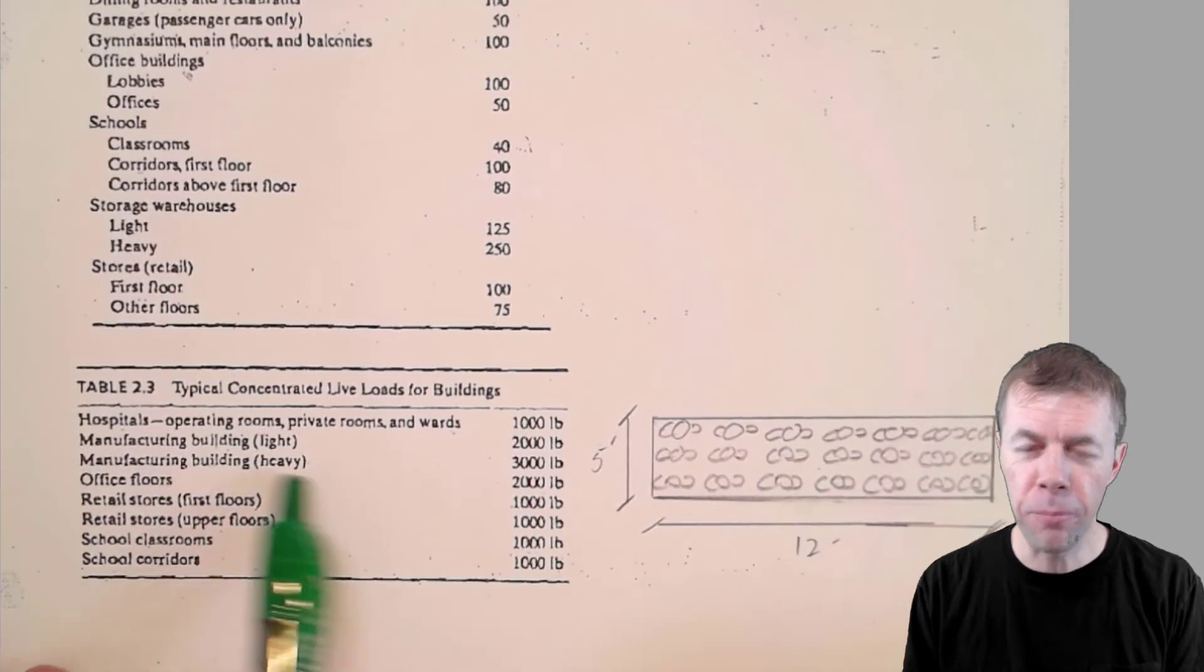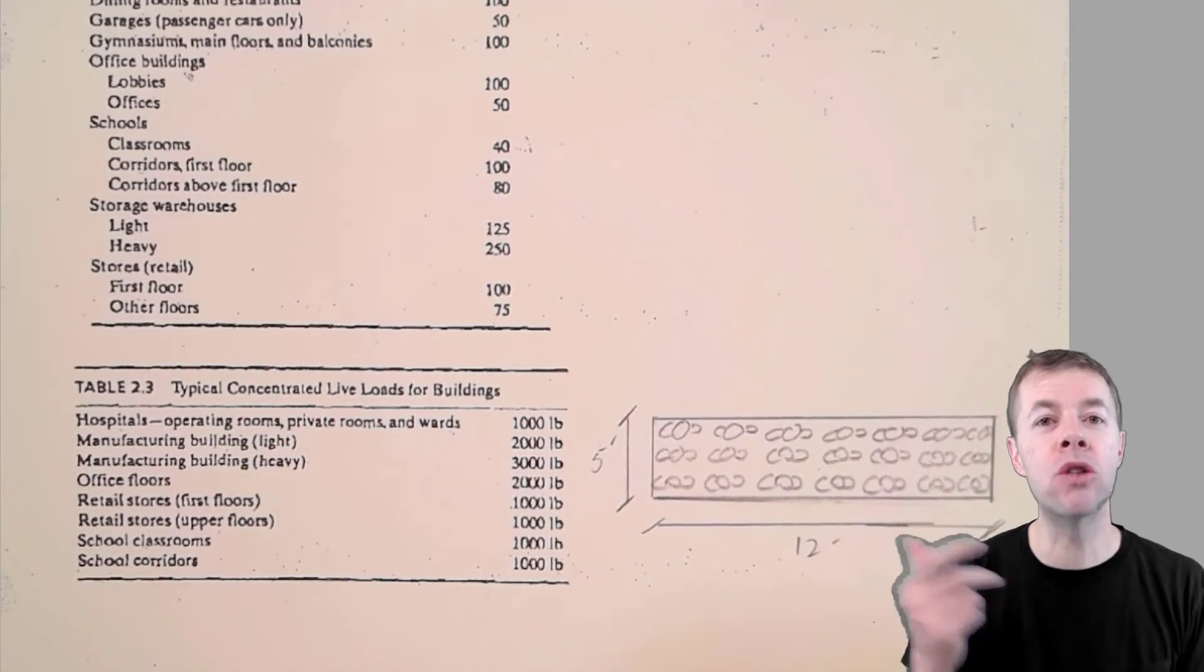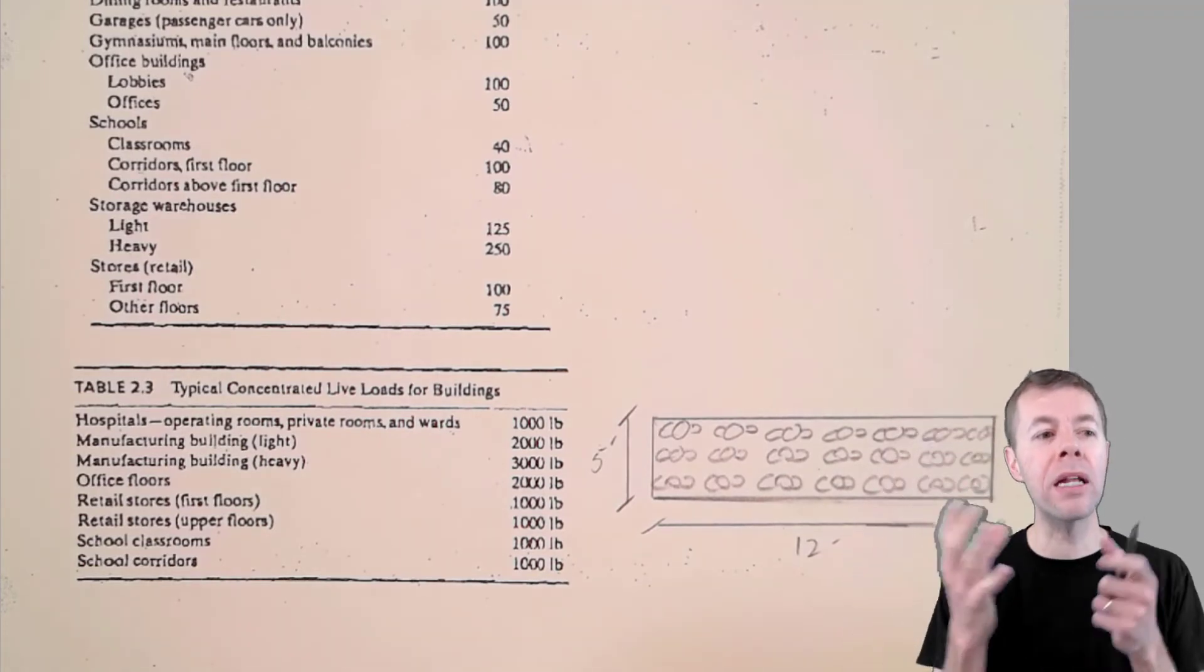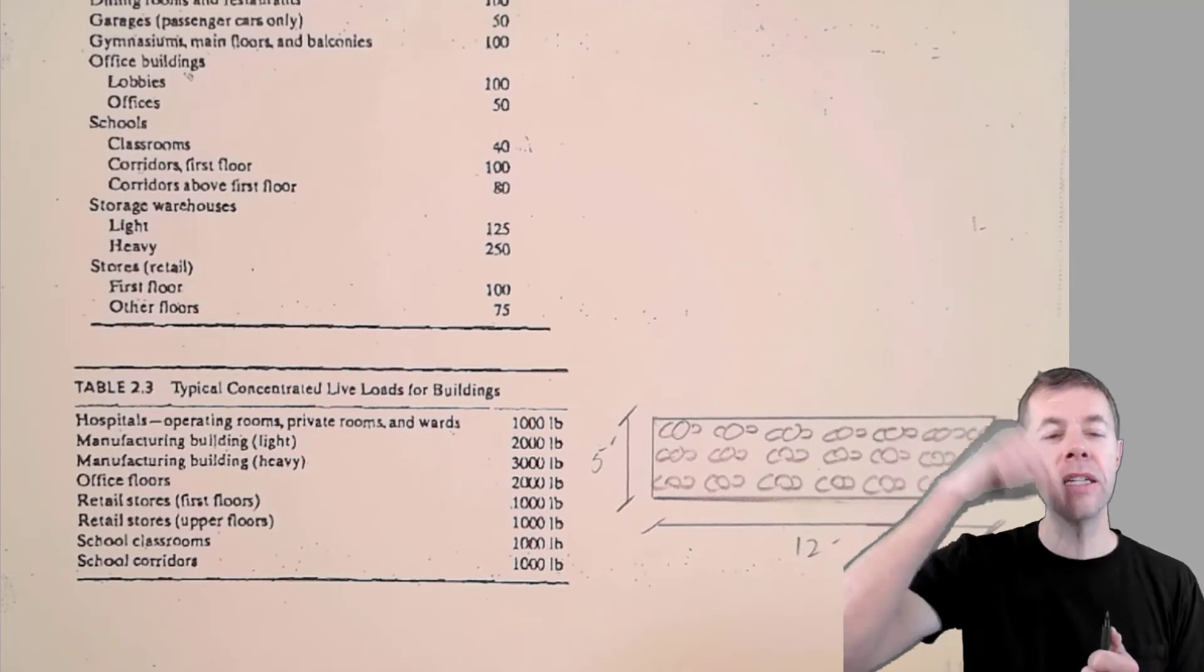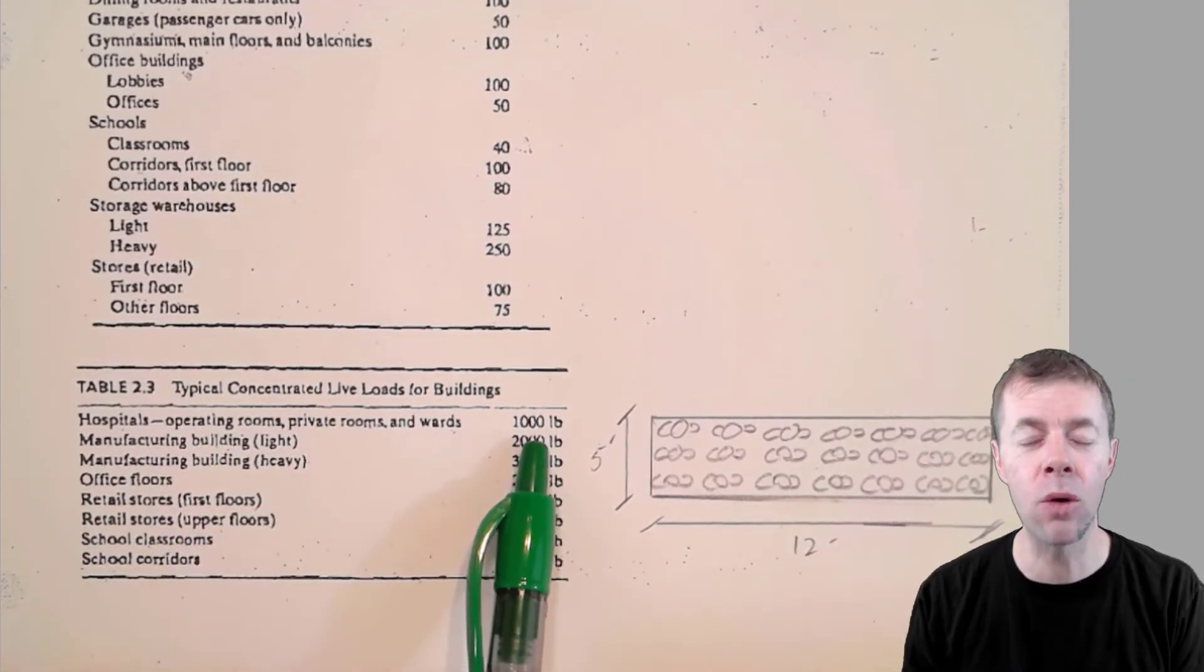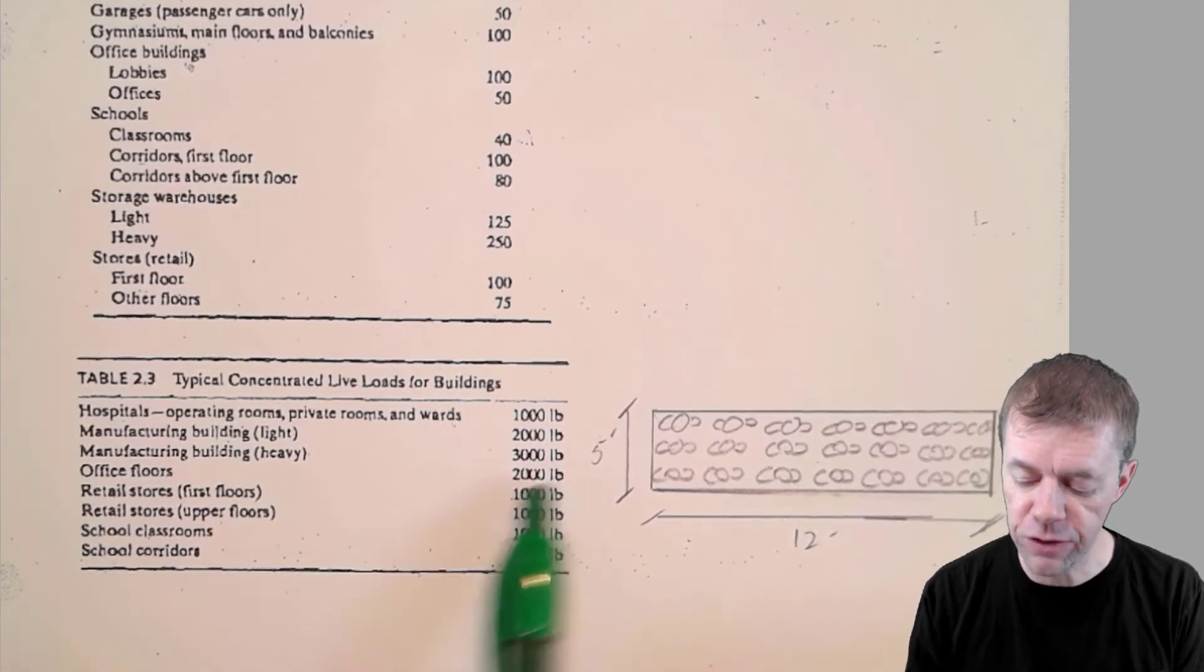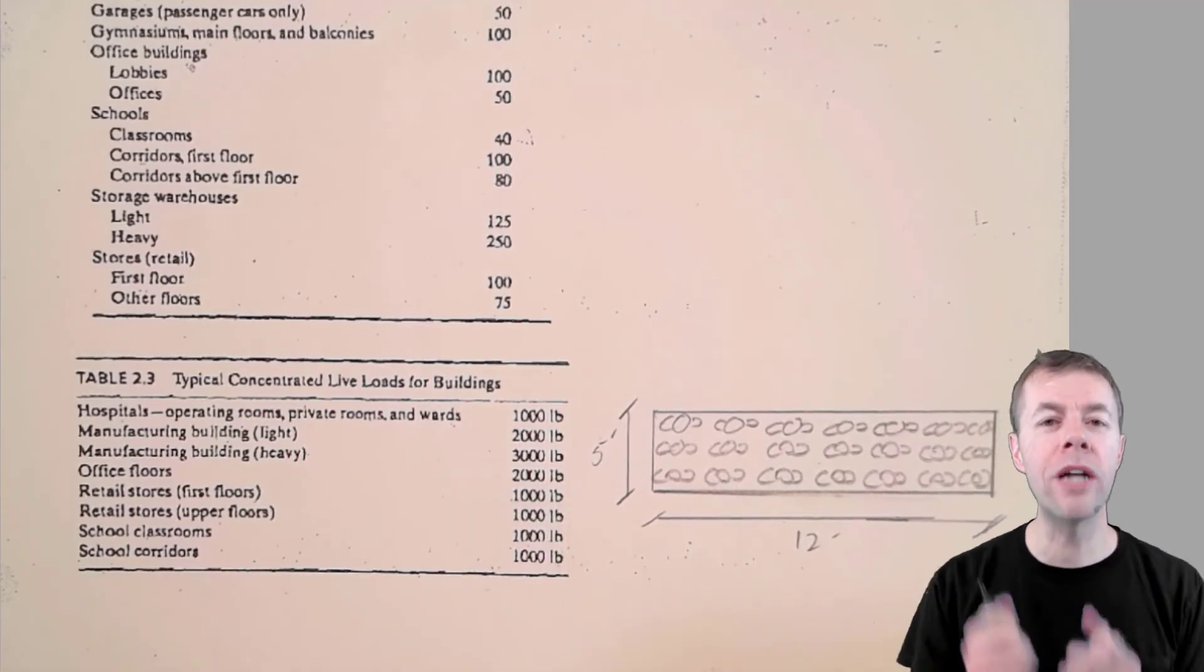Also, you have to sometimes design for point loads. Point loads? What? Yeah. It's kind of like it would be awful if somebody dropped a bowling ball in your building and it broke it, right? Well, a bowling ball probably wouldn't, but you might drop something else or you might need to put a piece of equipment or a piece of machinery. So you have to design and understand these different point loads. For example, a hospital operating room used to at least be able to handle a thousand pounds because they may have a piece of equipment in there that weighs that. A manufacturing building, 2,000 pounds. Heavy manufacturing, 3,000 pounds. Office floors, 2,000 pounds. These are all things that you got to make sure that your localized structure can handle that.